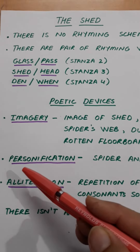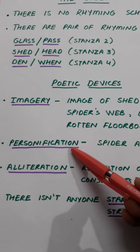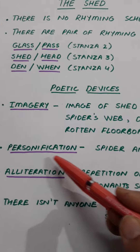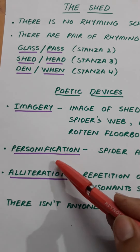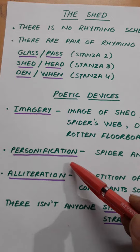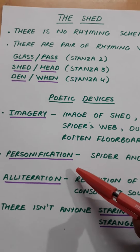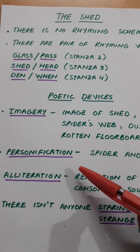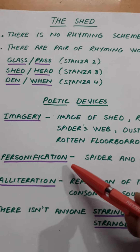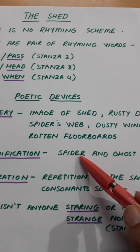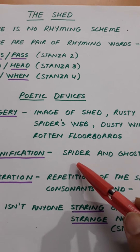The second poetic device used in the poem is personification. I have already told you earlier that personification means when human qualities are given to a non-living or inanimate object. So in this poem, the spider and the ghost are personified.